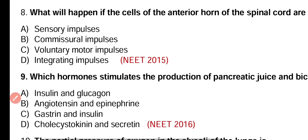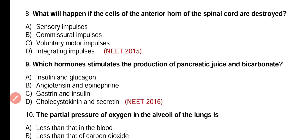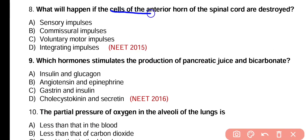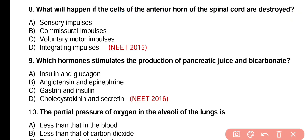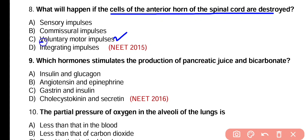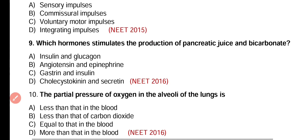Question number 8. What will happen if the cells of anterior horn of spinal cord are destroyed? Correct answer is option C. If the cells of anterior horn of spinal cord are destroyed, there will be loss of voluntary motor impulses.